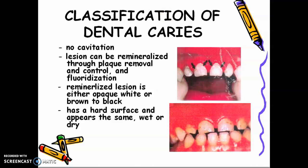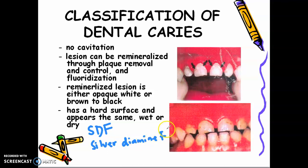At present, we have what we call SDF — silver diamine fluoride — that we use in children. When a child has many active caries on all teeth, we don't extract all of them. We apply silver diamine fluoride, which makes the soft caries hard and makes it arrested, preserving the tooth in the mouth.